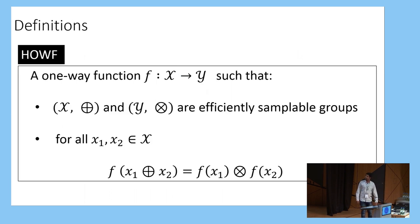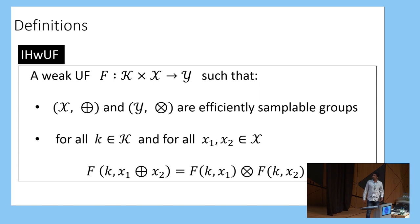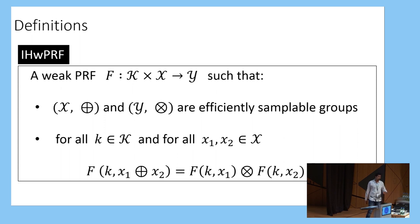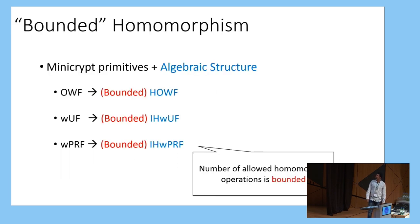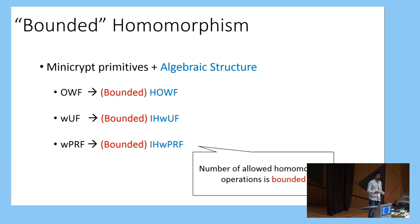Some very short definitions. A homomorphic one-way function is essentially a one-way function satisfying the standard security properties. Additionally, the input and output spaces are groups which are efficiently samplable and have efficiently computable group operations. Similarly, for an input-homomorphic weak unpredictable function, we have input and output groups which are efficiently samplable. Note that we do not assume any structure on the key space. We also consider a notion of bounded homomorphism, wherein we put an upper bound on the number of operations allowed — primarily to accommodate lattice-based assumptions where exact homomorphic relations may not necessarily hold due to noise.